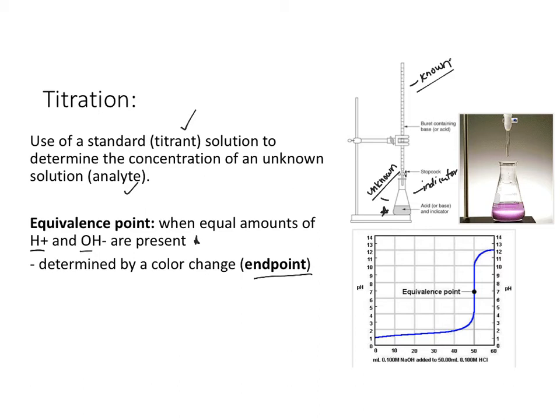End point and equivalence point are not the same thing. Equivalence point is the point at which the H+ and OH- concentrations are exactly the same. The end point may be a little bit beyond that, but that's why we perform the titration with burettes, which give lots of significant figures, so that even if we are off, it's just by a little bit.